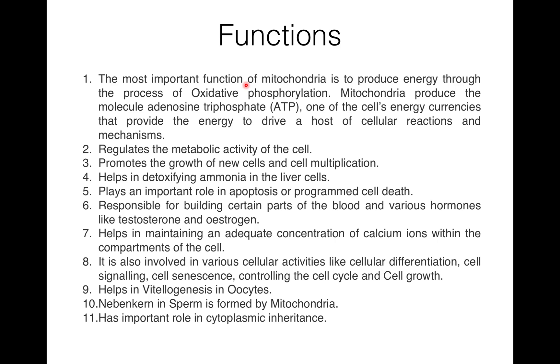Nebenkern found in sperm is formed by mitochondria. Mitochondria also have an important role in cytoplasmic inheritance. They are known as semi-autonomous organelles because they contain their own DNA and ribosomes. So they are sometimes compared with a prokaryotic cell or cell within a cell.